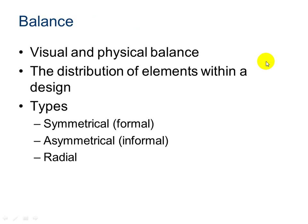The first principle is balance — we have visual and physical balance. The distribution of elements within the design is what we're considering to be balance. There are several types: symmetrical, asymmetrical, and radial. Just as objects have a physical weight dependent on the mass of the item, objects also have a visual weight based on the area, color, and other elements of design.